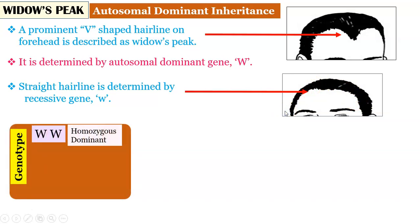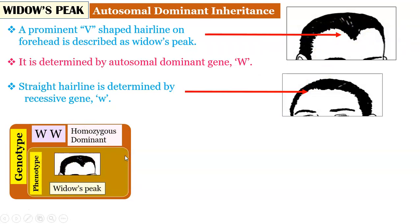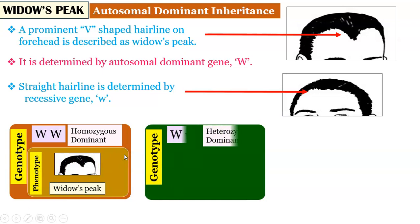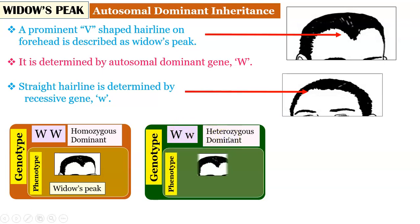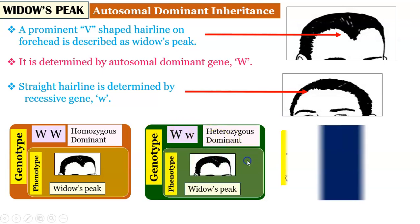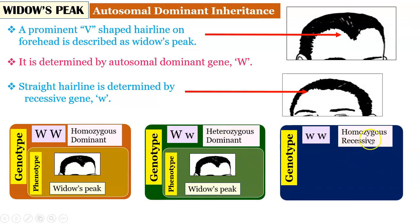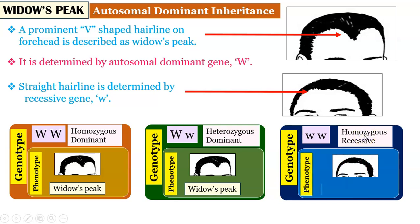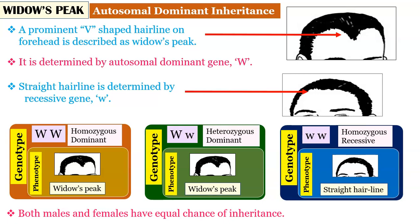What are the possible genotypes? The first is homozygous dominant, both capital W and capital W. Since the capital W is responsible for widow's peak and both genes are dominant, the phenotype is widow's peak. The second possible genotype is heterozygous dominant, where one gene is dominant and the other is recessive, but the dominant gene shows its expression and the phenotype is again widow's peak. The third possible genotype is homozygous recessive; both genes are recessive, so the phenotype will be straight hairline. Both males and females have an equal chance of inheritance of this feature.